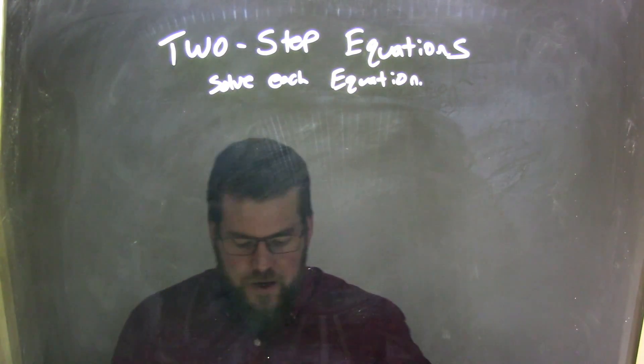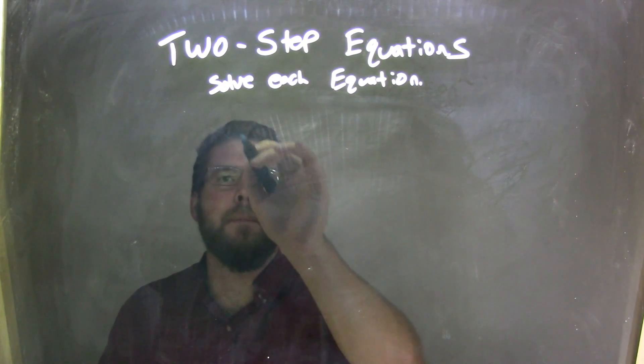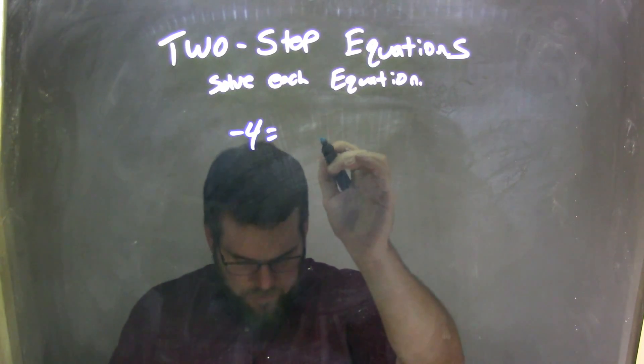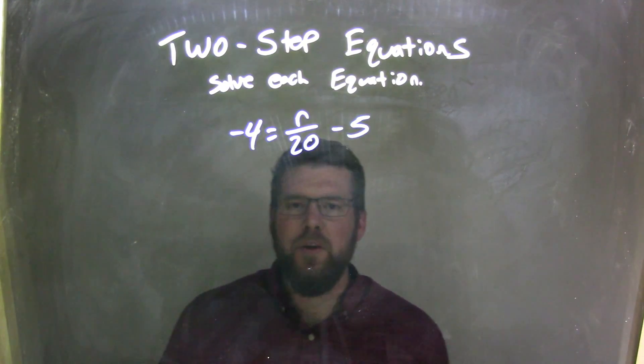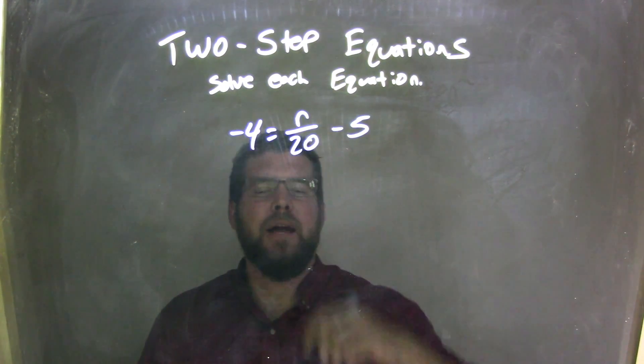So, if I was given this equation: negative 4 equals r over 20 minus 5.